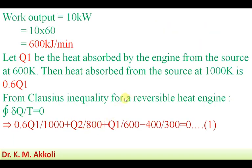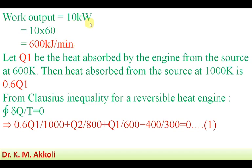The heat rejected is given in kJ per minute while the work output is given in kW. We need a common unit for both. We will convert the work output from kW into kJ per minute by multiplying by 60: 10 kW × 60 = 600 kJ per minute. So the work output W = 600 kJ per minute.